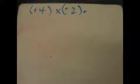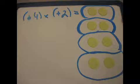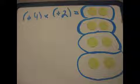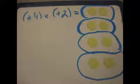This is how you multiply a positive times a positive. This equation means you add 4 groups of positive 2, which you can clearly see equals positive 8.